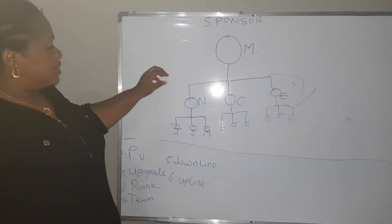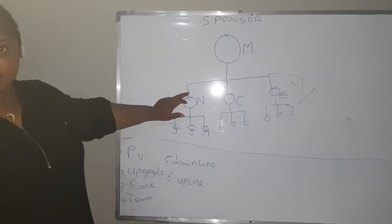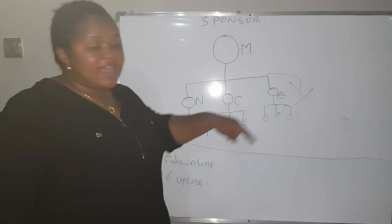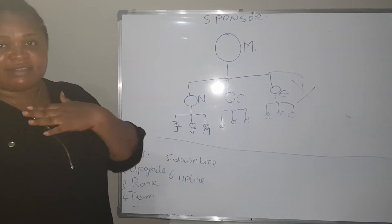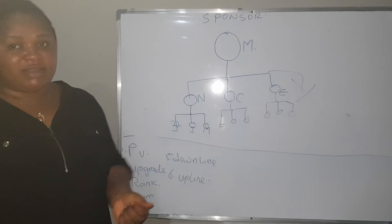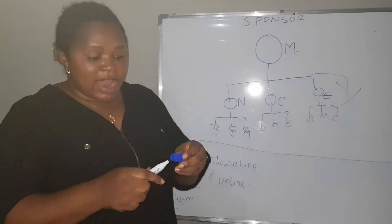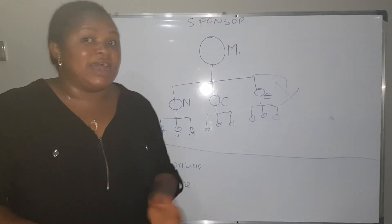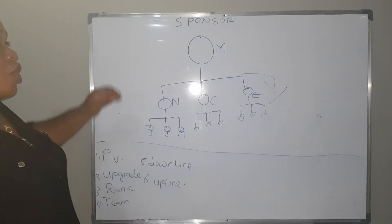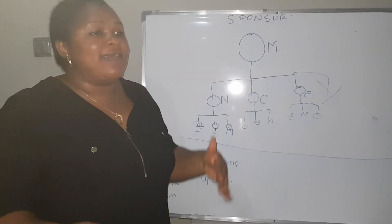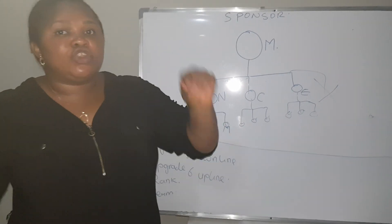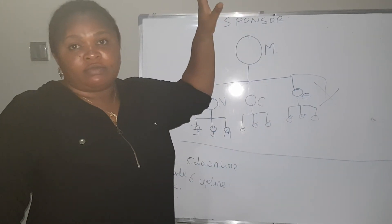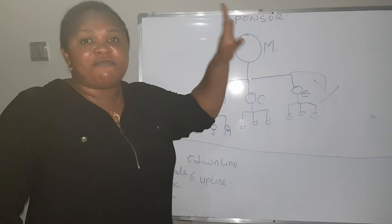These people are Mary Jane's direct downline by sponsorship, but indirect by placement. You sponsor someone but place them under someone else in your team — that placed person is still your team. Mind you, you never place someone under someone who is not in your team, or the PV is gone. Do you understand? The PV is gone.